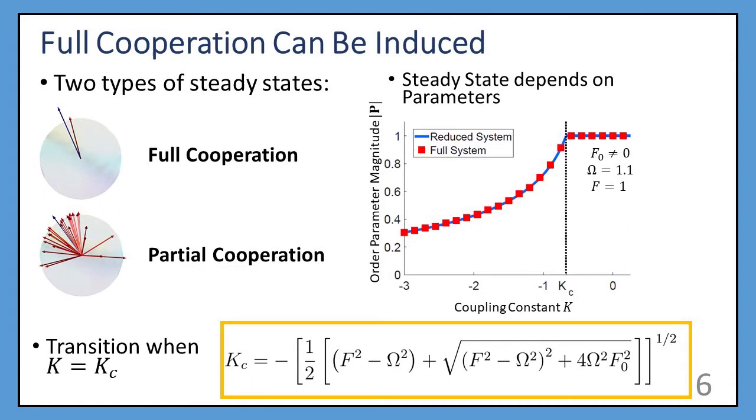And so we found that full cooperation can be induced, and the system goes to one of two steady states. One exhibits full cooperation, in which the agents follow the driver as one, and the other partial cooperation, in which they follow, but each in their own way. And so we see a transition in this plot of order parameter magnitude versus the coupling constant K from partial cooperation to full cooperation, and we could determine analytically where that transition happens.